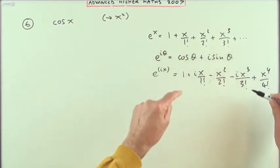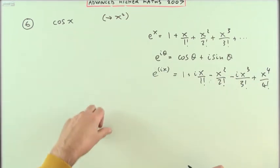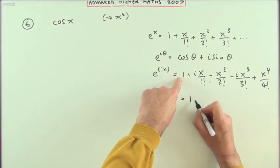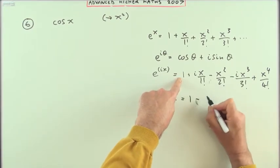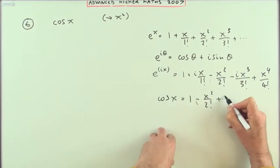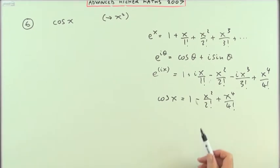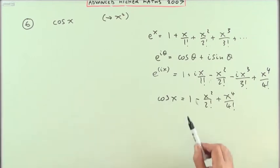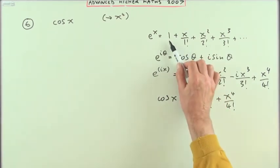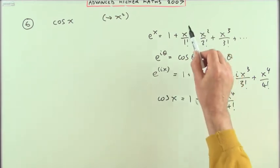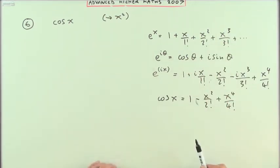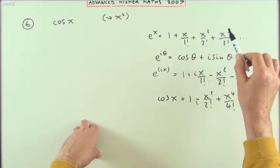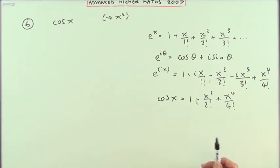Then equating real and imaginary parts, you could get this one from those terms. The cos x would come from the real parts: 1 minus x squared over 2 factorial plus x to the 4 over 4 factorial. Notice it's just alternate terms of e to the x. Once you've done e to the x, you can get cos x and sin x straight from it. Cos x starts at 1, sin x starts at x over 1 factorial minus x cubed over 3 plus x to the 5. So you could have stated that straight away.